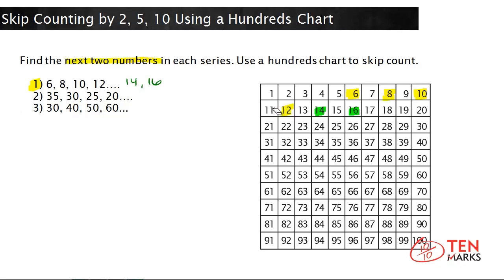Let me erase the highlights for these numbers and then we'll look at the next number series. Here's our next number series in green. The numbers are 35, 30, 25, and 20.